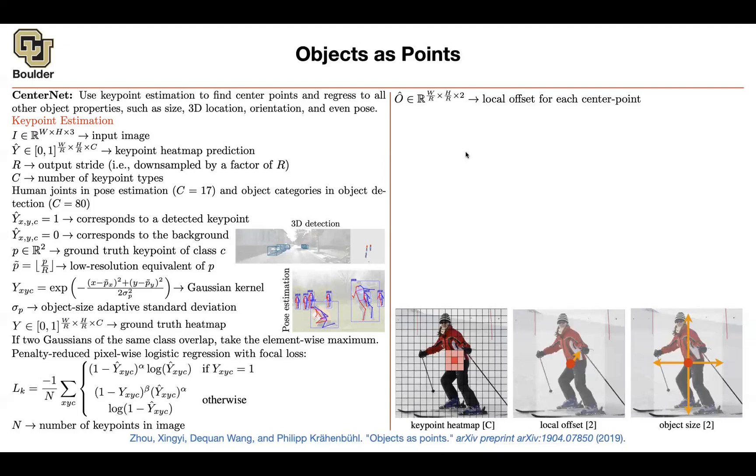You're predicting the offset and you know the ground truth for it. Which is if you take the exact P over R and it's quantized version. Subtract them. That's going to be how much you need to offset that point. To correct for the fact that you lost some resolution.